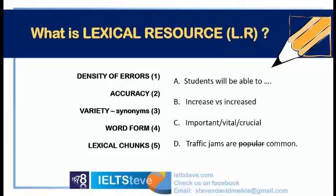On the other side you have options — these are examples, so you have to match them across. I like to do this so we make it like a real IELTS matching question. There are five items numbered one to five, but there are only four choices, so one of them is not mentioned on the other side. Pause now and have a go with your partner.